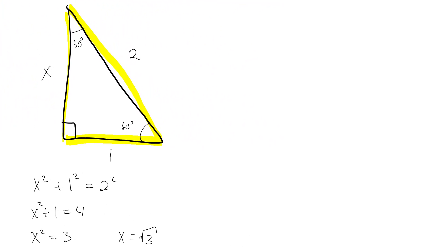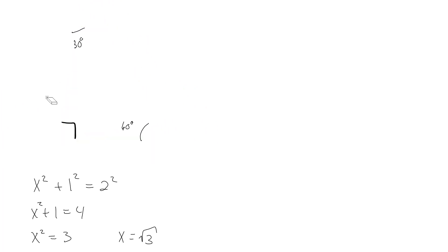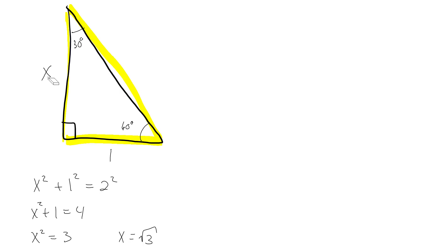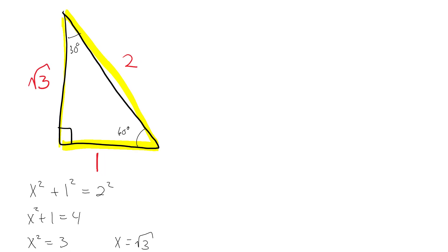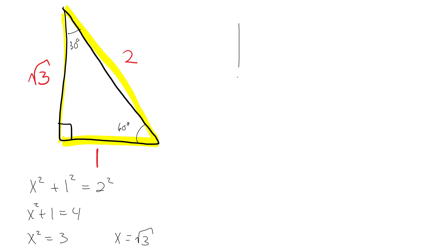So the relationship is: if the shortest side is 1 and the longest side (hypotenuse) is 2, then the middle side is √3 — or any multiple of that. For example, if the hypotenuse is 4 and one leg is 2, then the last side is 2√3.